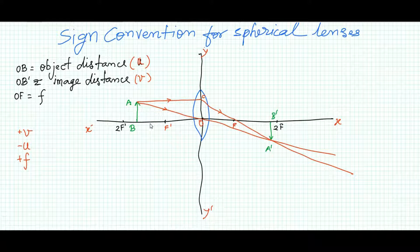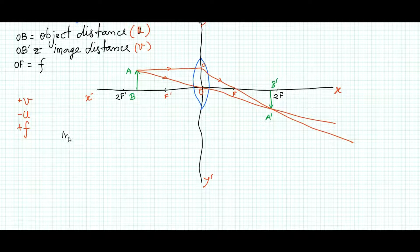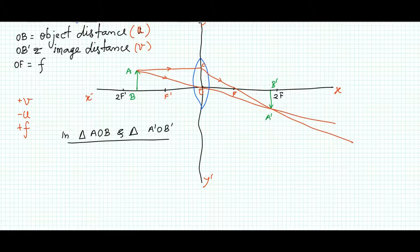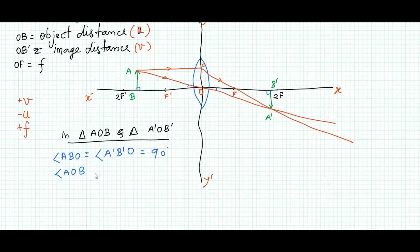For the derivation of the lens formula, we use triangle similarity. First, I consider the similarity between triangle AOB and triangle A'OB'. In triangle AOB and triangle A'OB', angle ABO equals angle A'B'O and both equal 90 degrees. Also, angle AOB equals angle A'OB', which are vertically opposite angles.